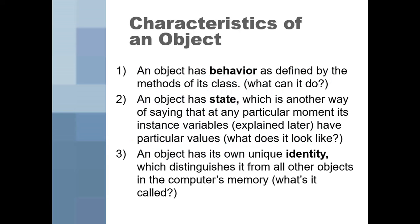Some characteristics of an object: an object has behavior as defined by the methods of its class — AKA what can it do? So like, can it give its name? Can it change its name? Can it change grade level? Can it graduate? Those would be different behaviors, different methods.